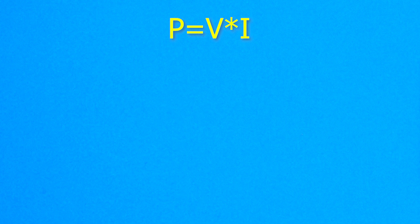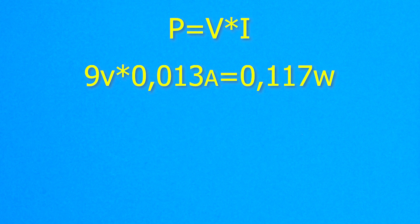For example, in our case, 9 volts fall across the resistor with a current of 13 milliamps. The power dissipated in the resistor is about one tenth of a watt. That's not a lot. Almost any resistor will do.